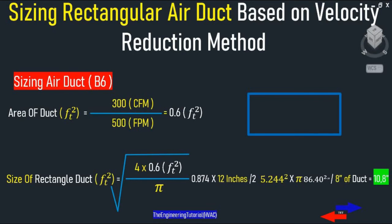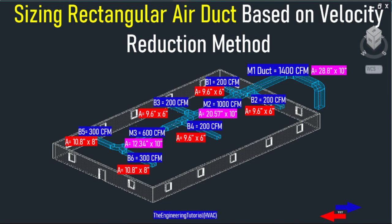Next, 300 CFM divided by a design velocity of 500 FPM, square root of 4 times 0.6 divided by pi, times 12 inches divided by 2, squared, times pi. That gives us 86.40 square inches. Dividing 86.40 square inches by 8 inches height gives 10.8 inches by 8 inches.